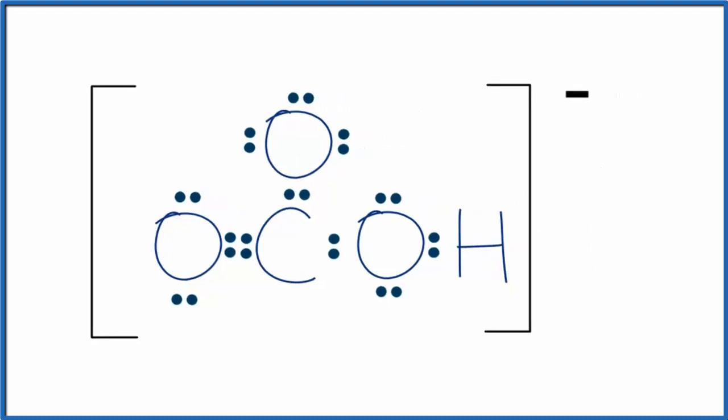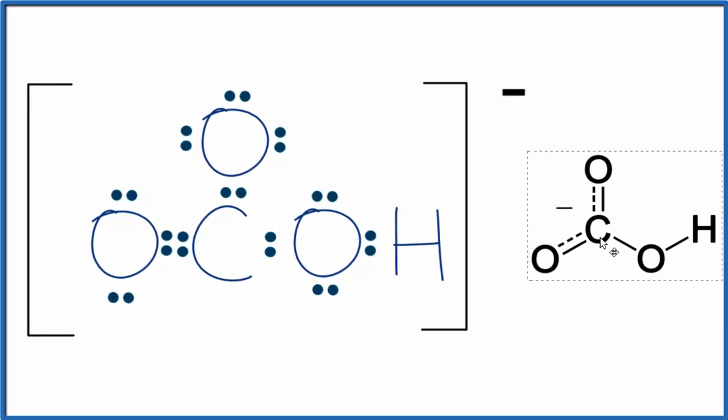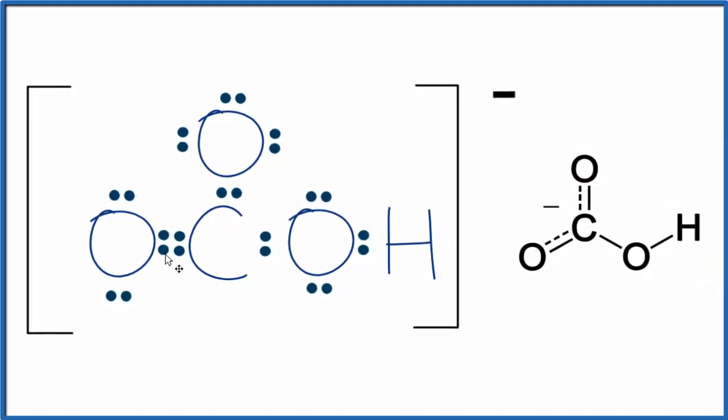We'd have something like this where we'd have this double bond and single bond mixed together. So we have a 1.5 bond here between these and the negative charge is shared or spread out over these two oxygens.